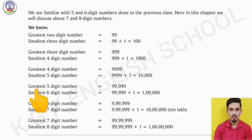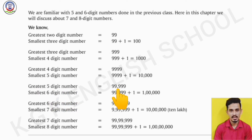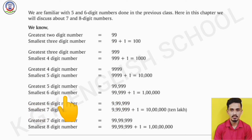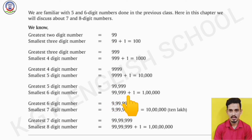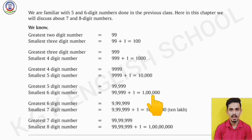The greatest 5-digit number is five 9's, that is 99,999. So the smallest 6-digit number becomes 99,999 plus 1, that is 1 followed by 5 zeros, which is called 1,00,000.